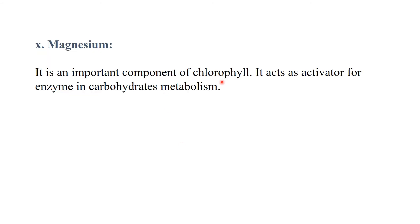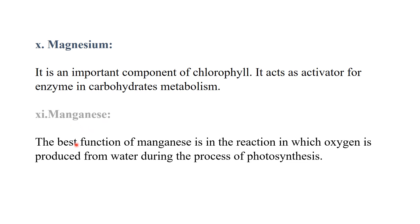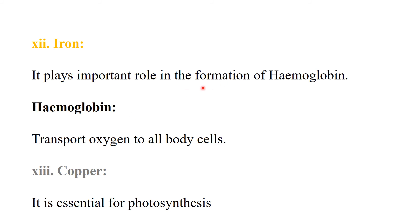Magnesium is an important component of chlorophyll. It acts as the activator for enzymes and in carbohydrate metabolism. The best function of magnesium is in the reaction in which oxygen is produced from water during the process of photosynthesis — jab water se oxygen banti hai photosynthesis ke dauran, us reaction mein magnesium perform karta hai. Iron plays an important role in the formation of hemoglobin, while magnesium is part of chlorophyll.